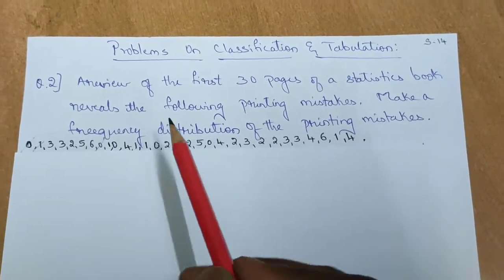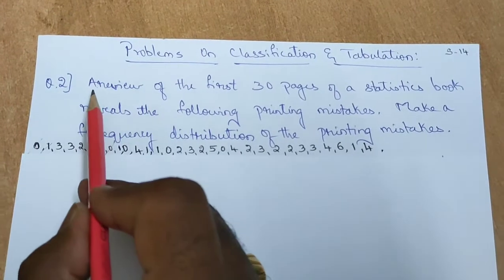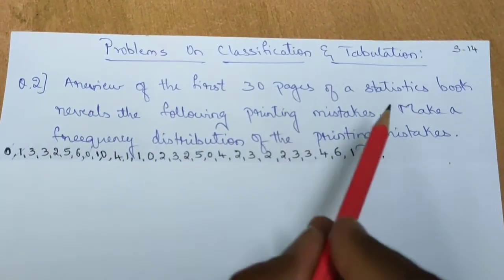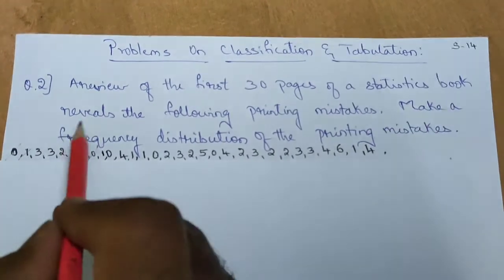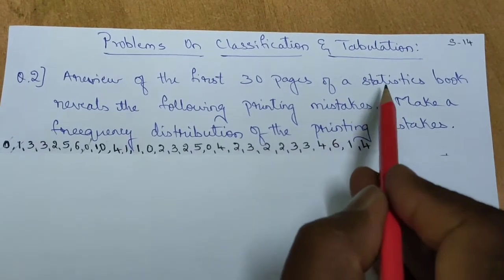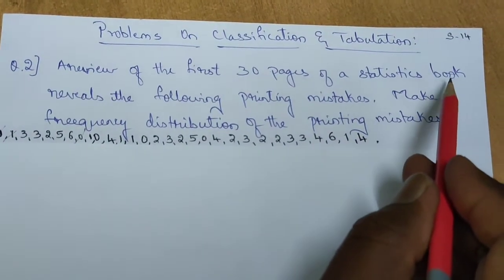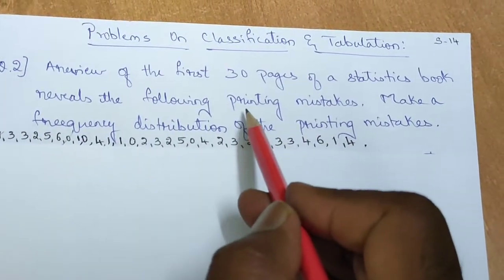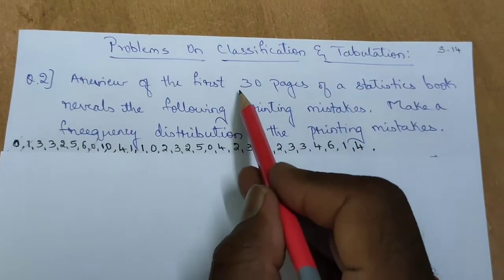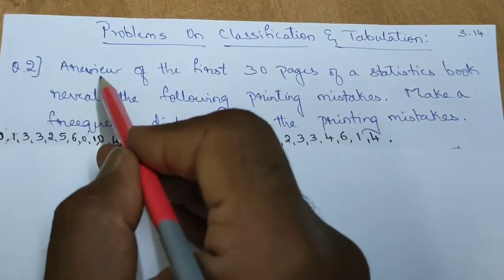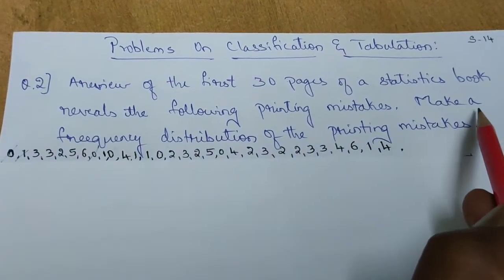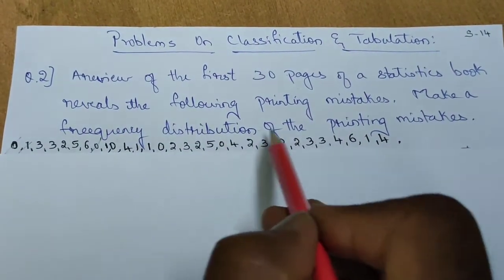Coming to the second question. The question says: a review of the first 30 pages of a statistics book reveals the following printing mistakes. In the statistics book there are many printing mistakes in the first 30 pages, and they are requesting you to make a frequency distribution of the printing mistakes.